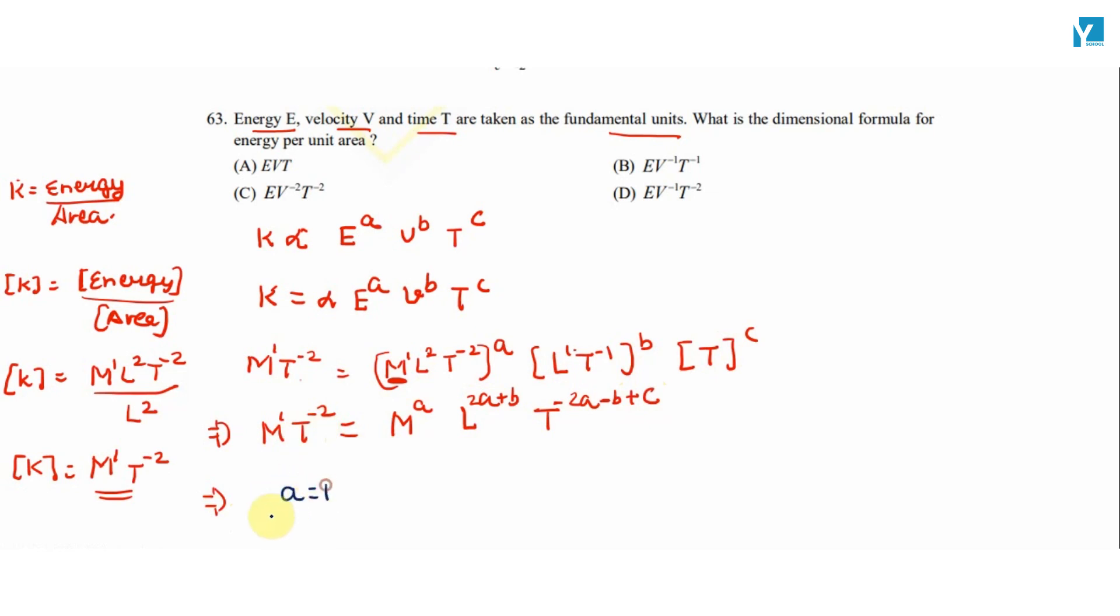Now equating the powers of M and T on both sides, we will get a is equal to 1. And so 2a plus b is equal to 0, this implies b is equal to minus 2.